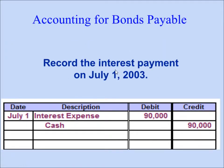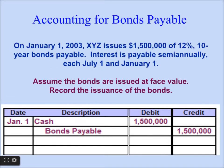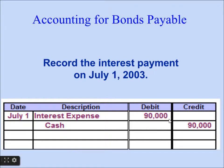Then on July 1, the company will pay interest. Since it is calculated semi-annually, we take 12% divided by 2, which gives 6%. 6% of $1,500,000 gives $90,000. So the interest expense is $90,000, which is debited, and cash of $90,000 is credited — paid out to the bond holders.